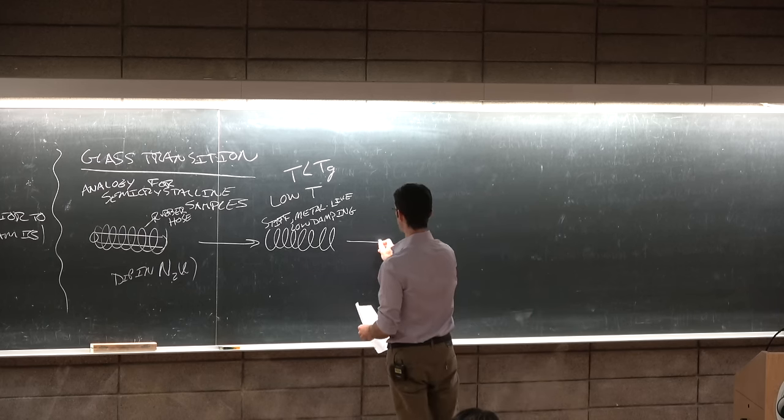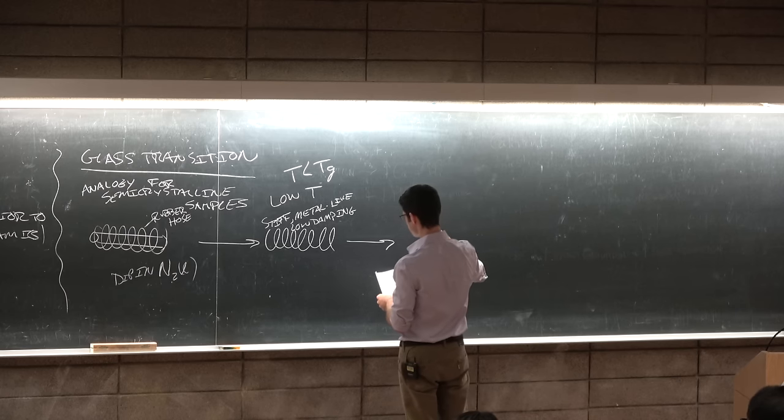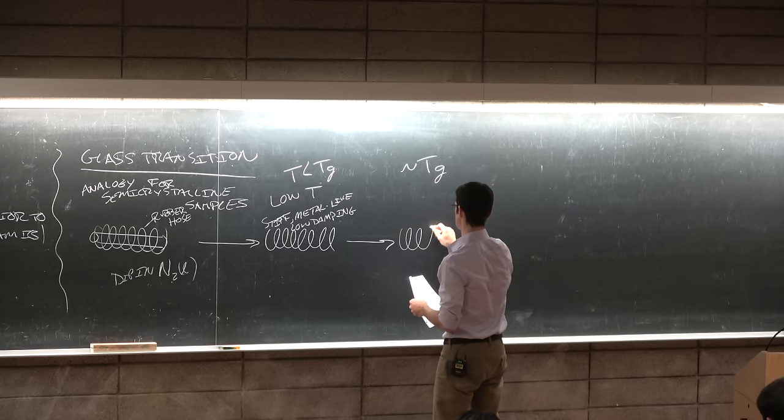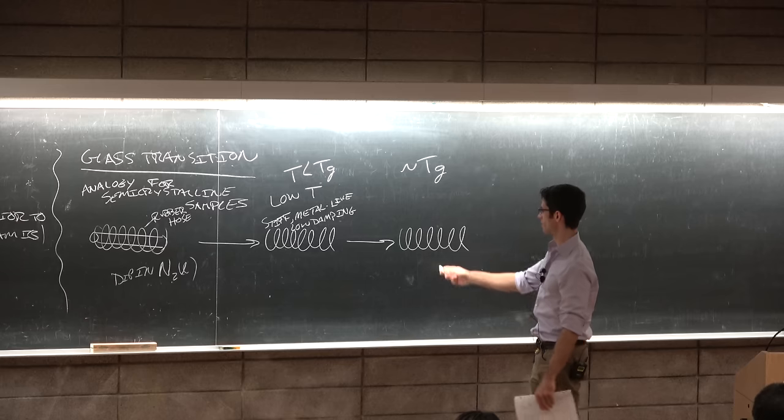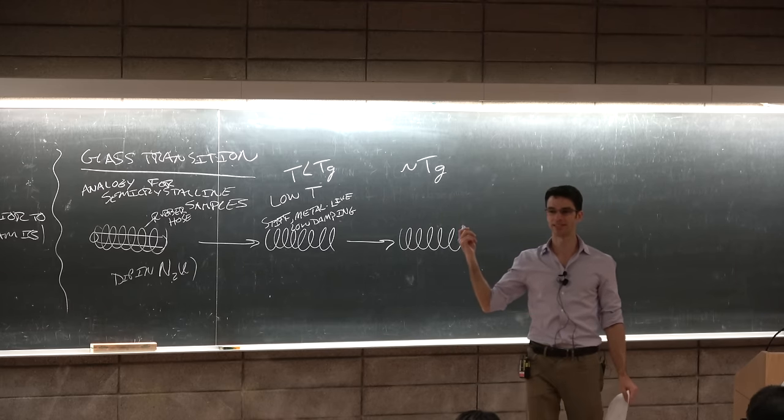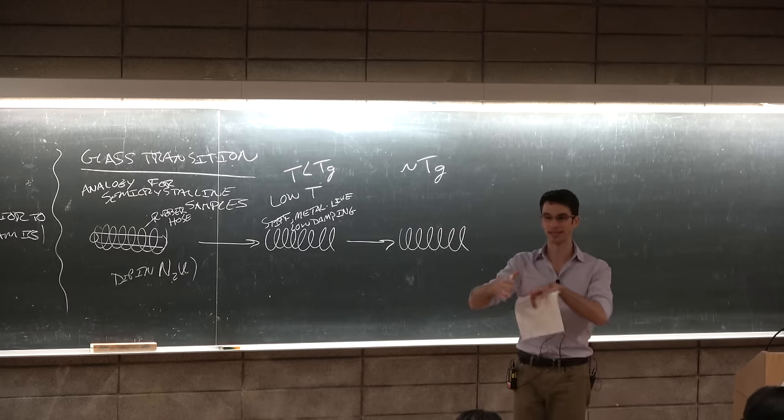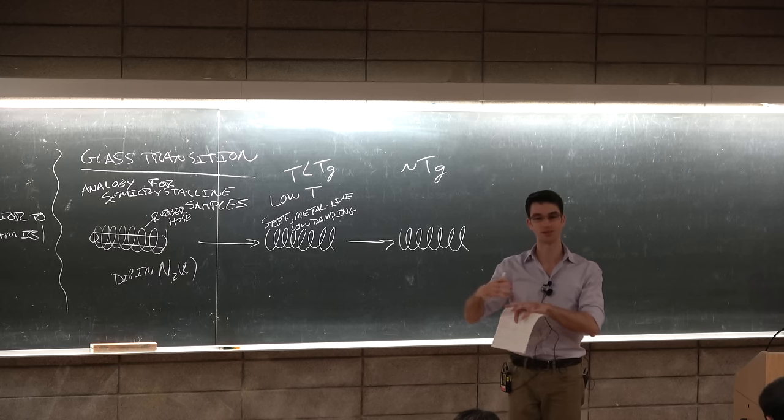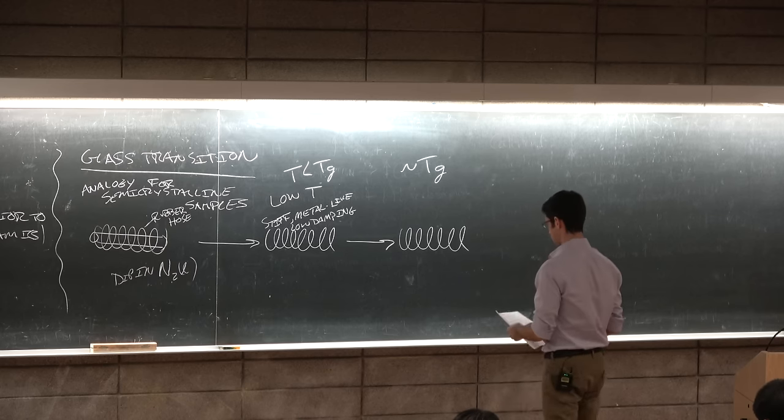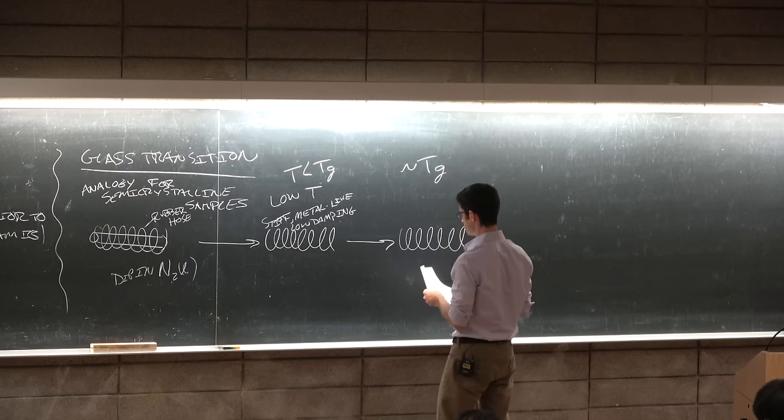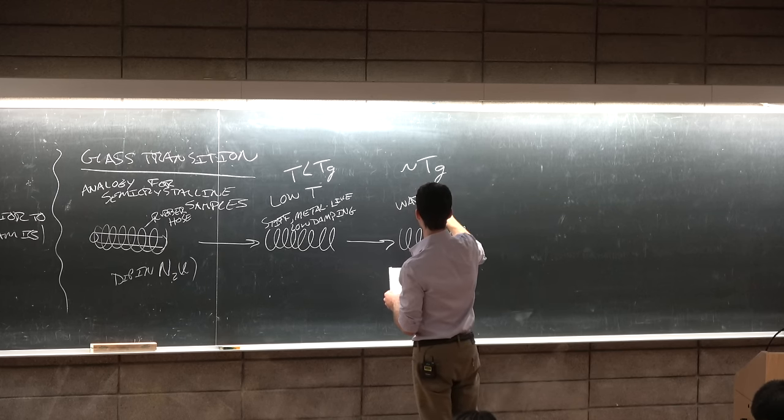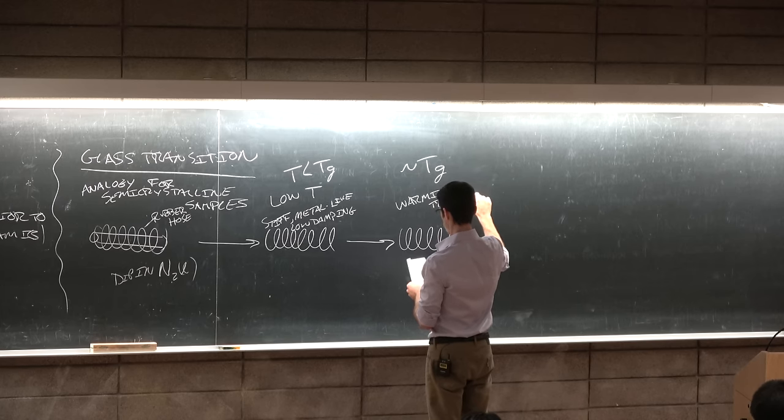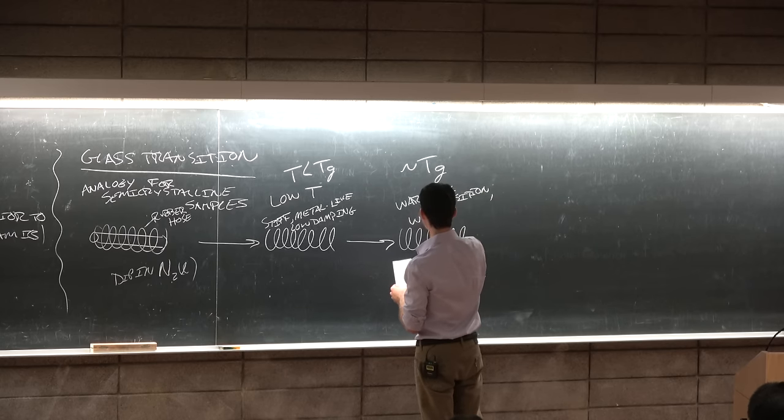What if you raise the temperature up to Tg? So this is around Tg. Now what happens is that the molecules in the rubber hose itself start to dissipate mechanical energy by having the chains slide past each other. But the crystalline domains in the rubber hose are still holding the bulk structure together. So in the vicinity of Tg, you have a warming transition.